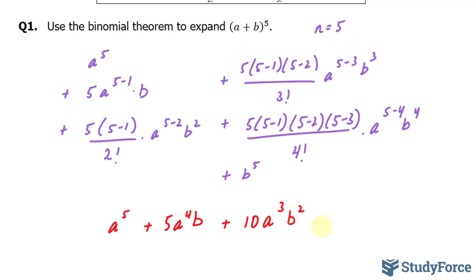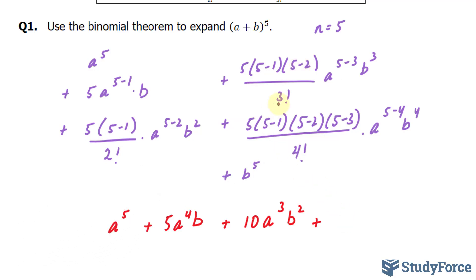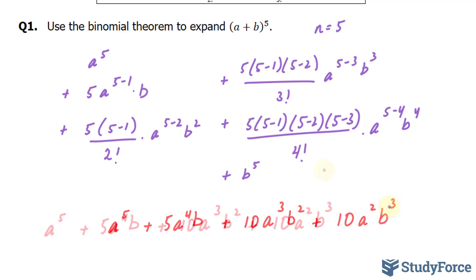Our next term was this one. We have five times four times three: four times three is 12, 12 times five is 60. 60 divided by three factorial — three times two times one is six — so 60 divided by six is 10. To simplify this part, we have a to the power of two, b to the power of three.